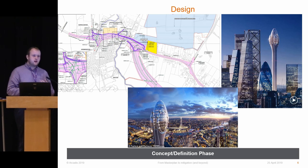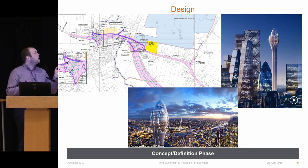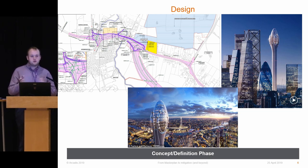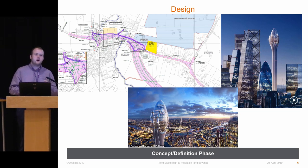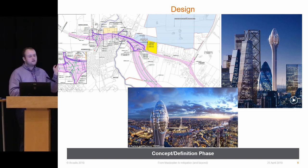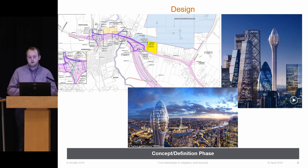Moving through the project lifecycle from a developer's perspective, the initial concept or definition phase is very much about design. Up there we have two images of the controversial Tulip Building, considering its impact on the historic environment — a lot has been made, particularly with Historic England, over its views to and from Tower Bridge. Heritage professionals can get involved in trying to influence that design. Also shown is an image of the A585, where heritage professionals can influence the line of the road to avoid scheduled monuments.